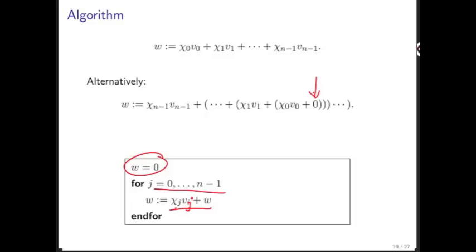For j equals 0, that's this operation. That then is stored in w. Then this here is what you do for j equals 1 and so forth.